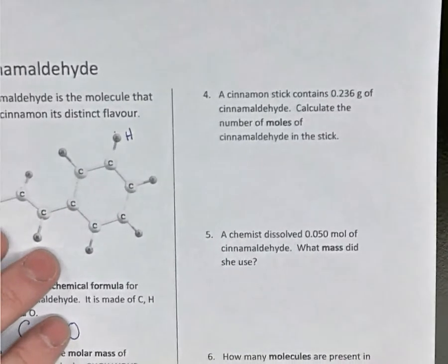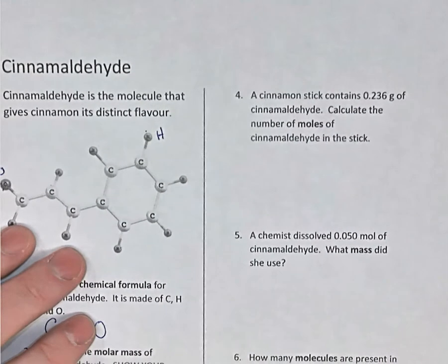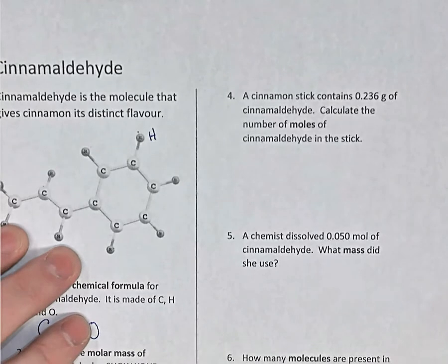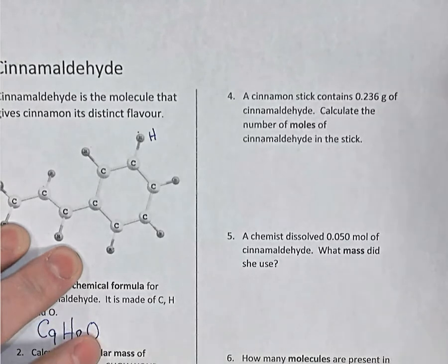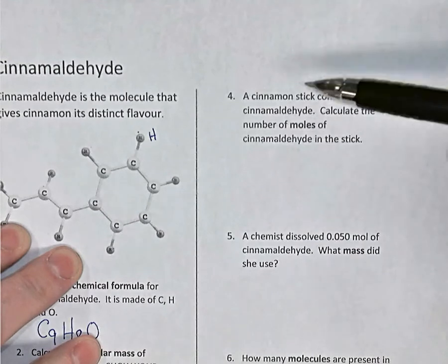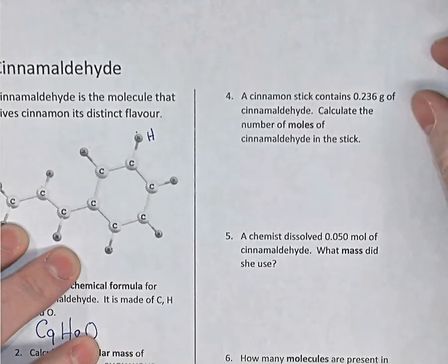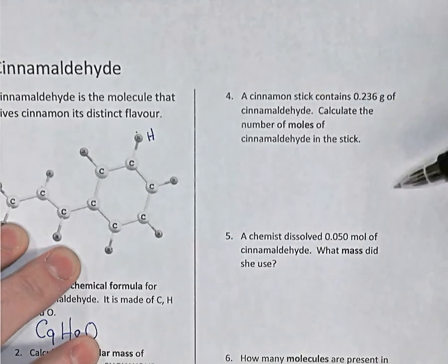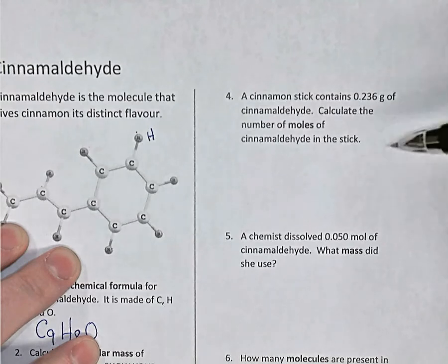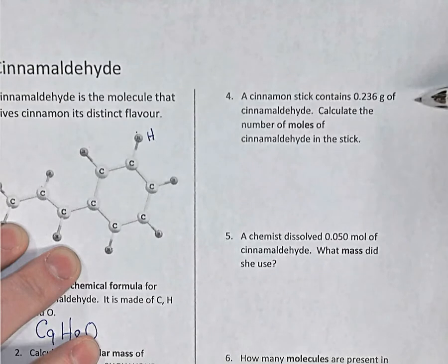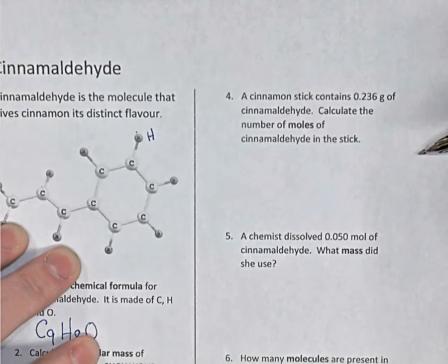Questions four through seven involve calculations with moles and molecules and masses. You can pause the video and try these yourself. Question four: a cinnamon stick has 0.236 grams of cinnamaldehyde. Calculate the number of moles of cinnamaldehyde in that stick.